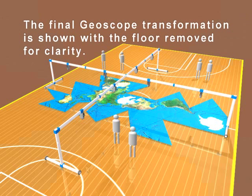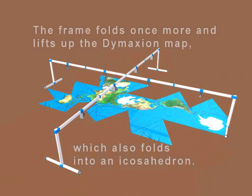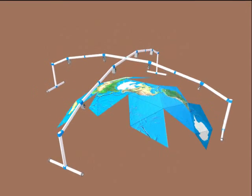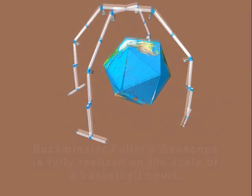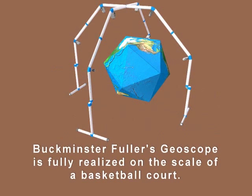The final geoscope transformation is shown with the floor removed for clarity. The frame folds once more and lifts up the DIMAXIUM map, which also folds into an icosahedron. Buckminster Fuller's geoscope is fully realized on the scale of a basketball court.